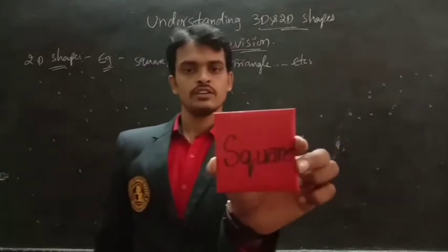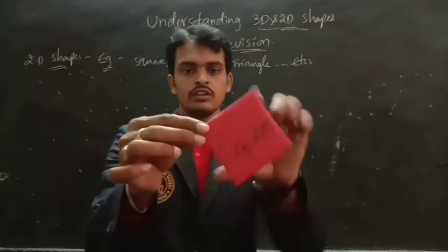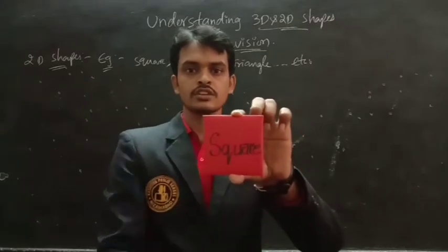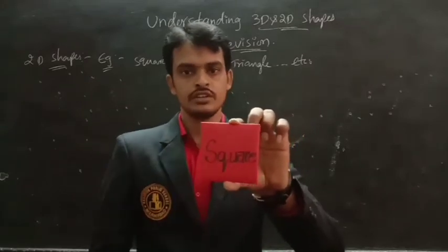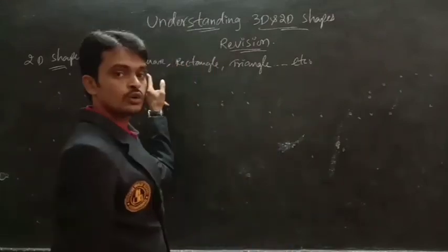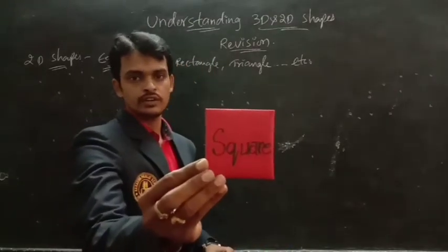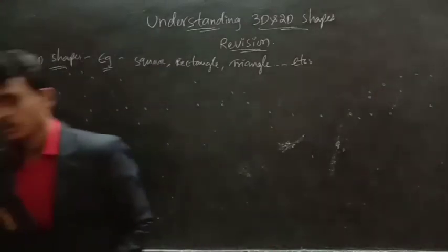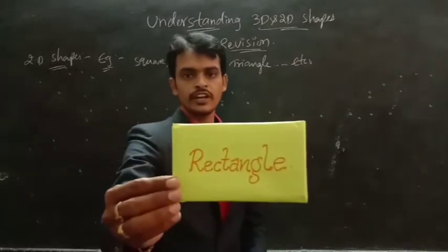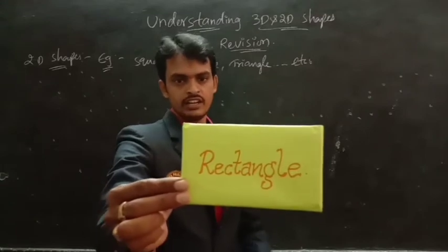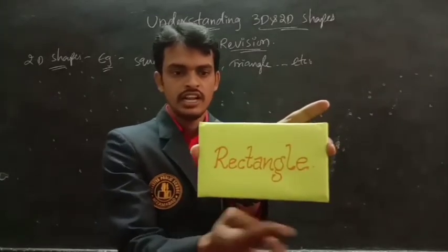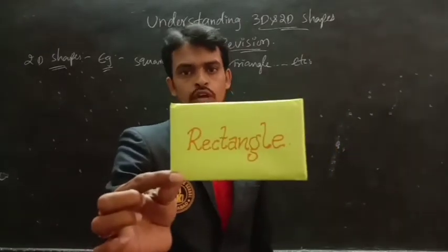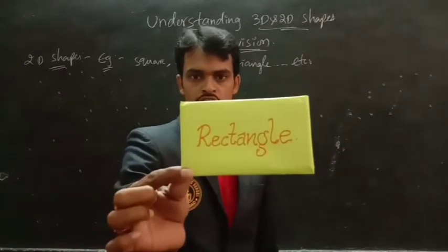Look at the figure — square. It has base and height. So how many dimensions does a square have? Two dimensions. So the square is a two-dimensional figure, a 2D shape. Look at the next figure — rectangle. Rectangle has a length and breadth, so it is also a two-dimensional figure, a 2D shape.